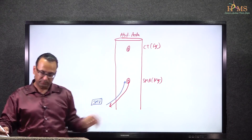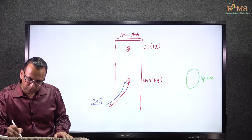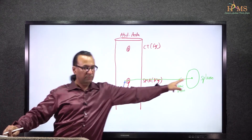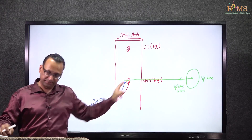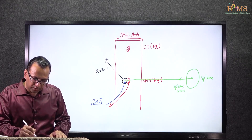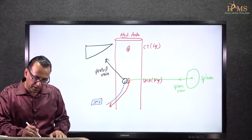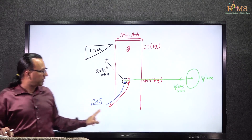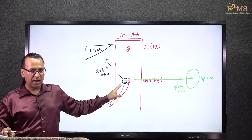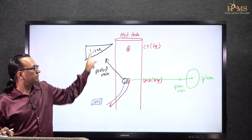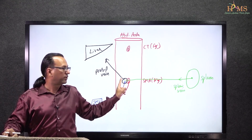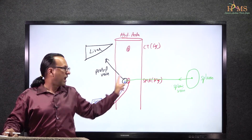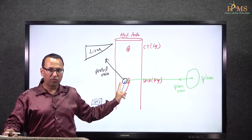The splenic vein comes from the spleen and joins the superior mesenteric vein, and together they form the portal vein, which goes towards the liver. This formation of the portal vein occurs at the transpyloric plane, at the level of the pylorus of the stomach, where the superior mesenteric artery is also found. This happens behind the neck of the pancreas.